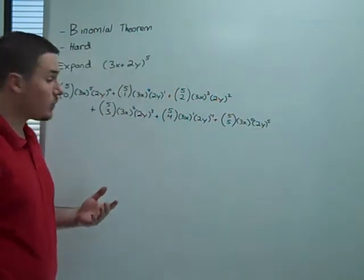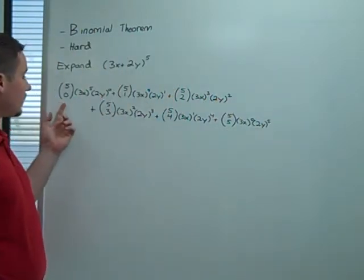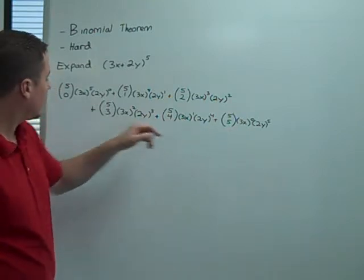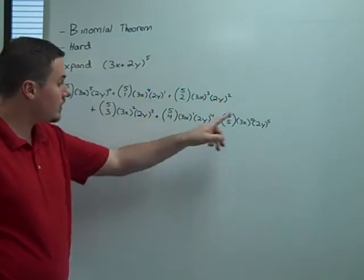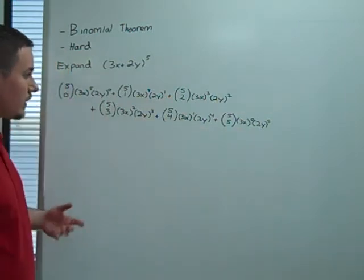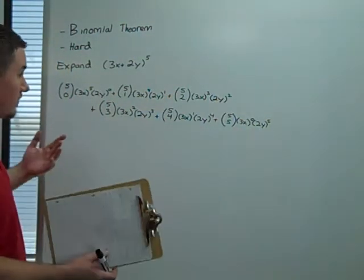Now, some things that are equal to 1. 5 choose 0. 5 choose 5. Anything raised to the 0 power is also 1. So this 2y to the 0 and 3x to the 0 is 1. But everything else we can simplify.